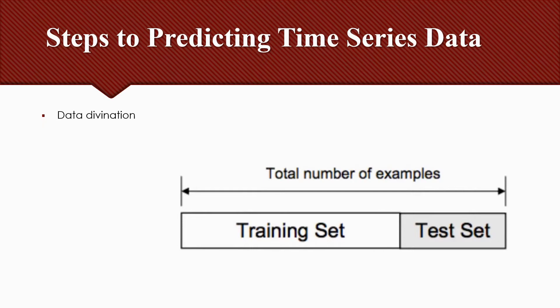The process involves taking a dataset and dividing it into two subsets. The first subset is used to feed the model and is referred to as the training dataset. The second subset is not used to train the model; instead it is used to evaluate the model. Predictions are made and compared to expected values. This second dataset is referred to as the test dataset. So, the train dataset is used to feed the machine learning model, and the test dataset is used to evaluate the fitted model.